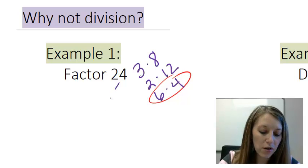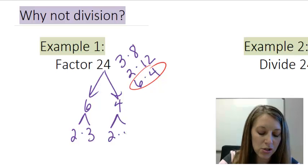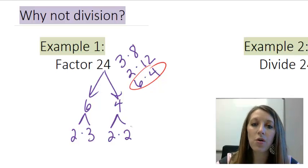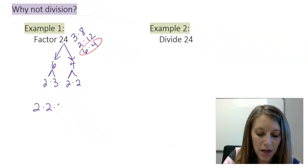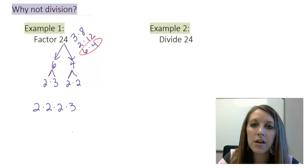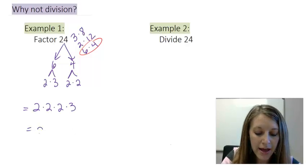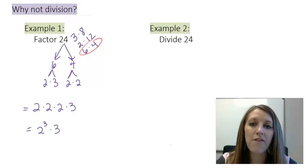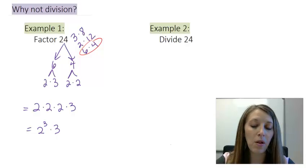So 24, let me write it as 6 times 4. And then 6, I'll write it as 2 times 3. And 4, I'll write it as 2 times 2. So the prime factorization of 24 is 2 times 2 times 2 times 3, just putting it in numerical order. Or I could think of it as 2 cubed times 3 if I want to write it in the condensed version. So there's an example of factoring a number, factoring 24.